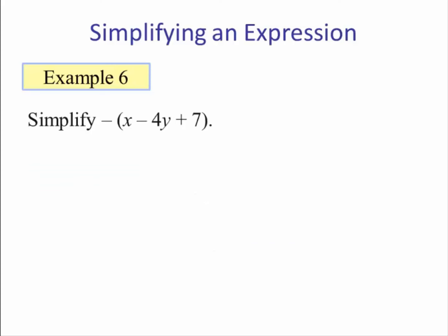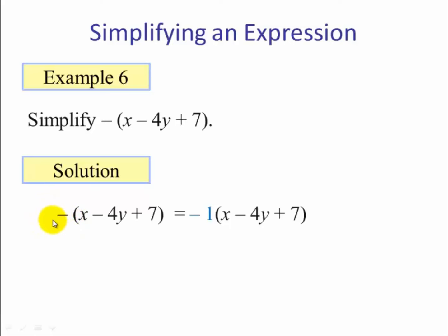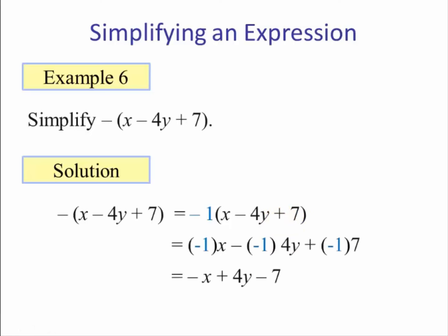Example six: simplify the negative of the quantity x minus four y plus seven. We treat the negative as a negative one and distribute it over all three terms, giving negative x plus four y minus seven. As we can see, for each term the sign changed.